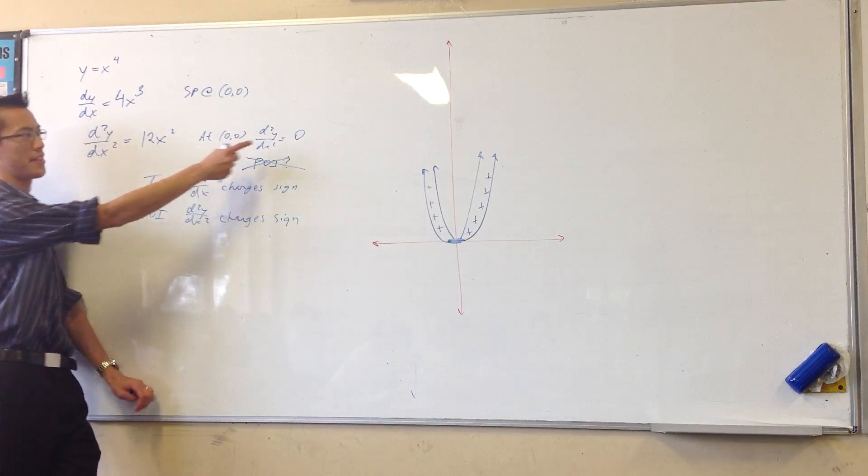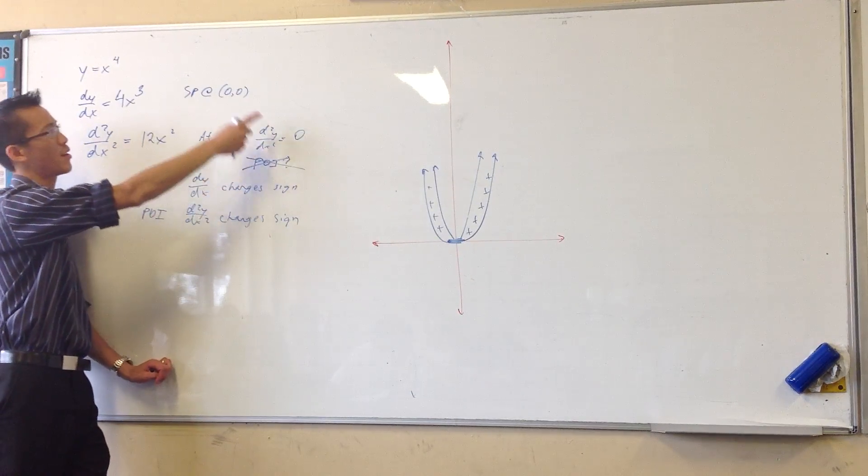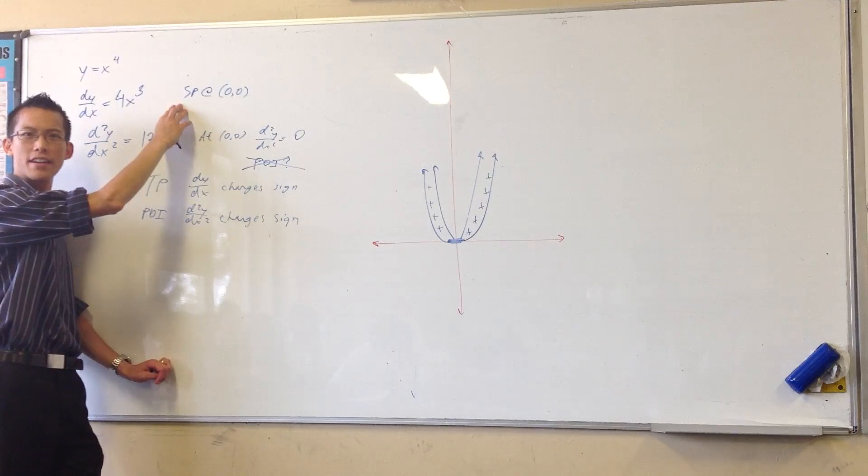So now, I want to think about this whole second derivative being equal to zero and first derivative being equal to zero at the same time.